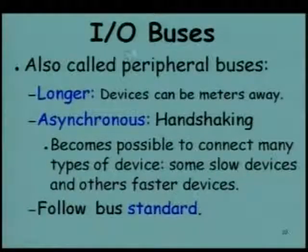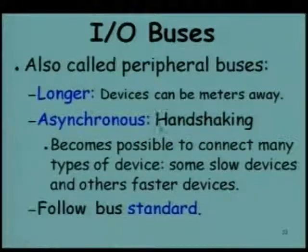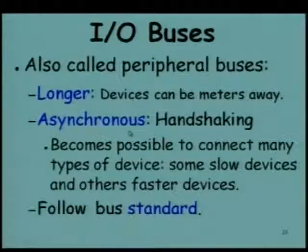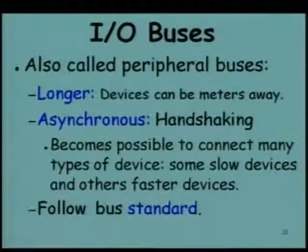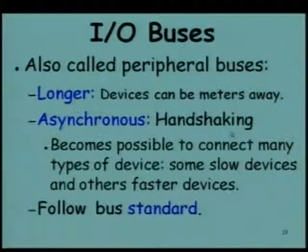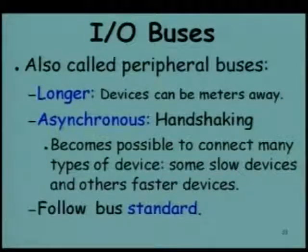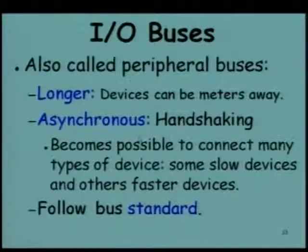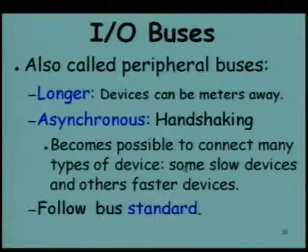I/O buses, also called peripheral buses, are longer buses because devices can be meters away. These are asynchronous buses because different devices operate at various speeds — there may be slow and fast devices — and using a synchronous bus it would not be possible to connect so many types of devices. Here handshaking is used compared to clock-based transfer in a synchronous bus. Normally these follow a bus standard, because without a standard you cannot connect different types of devices to your computer.